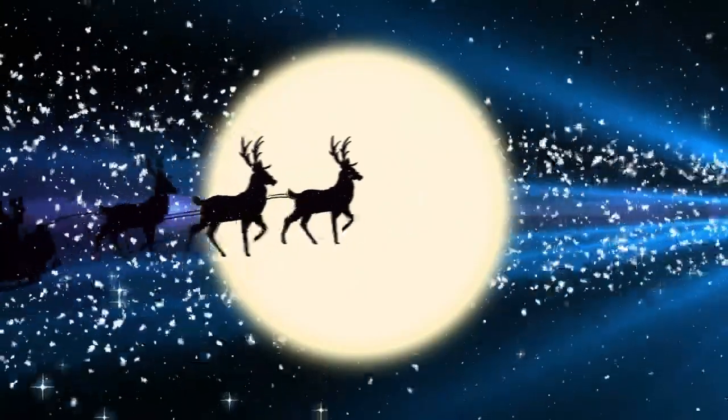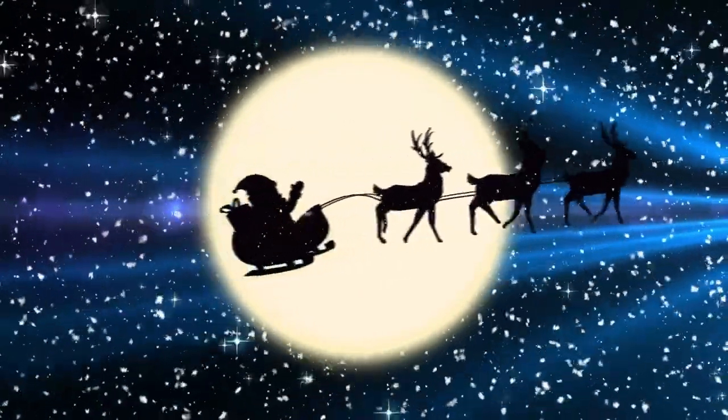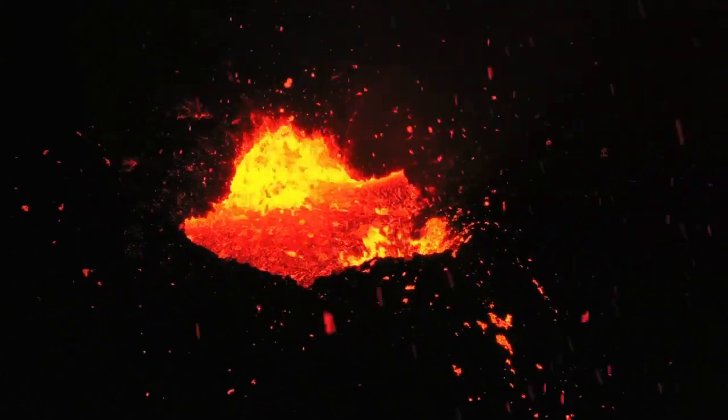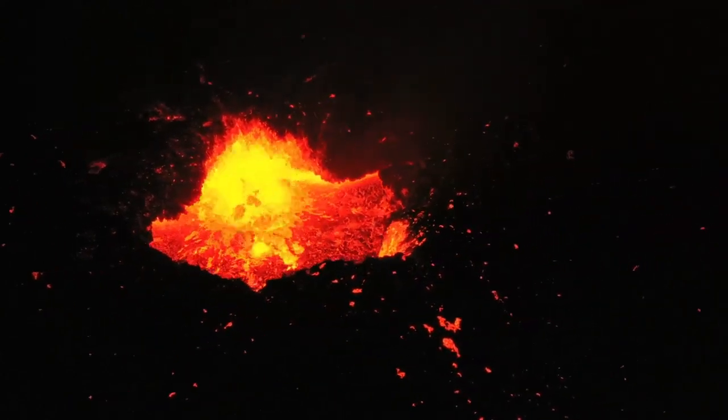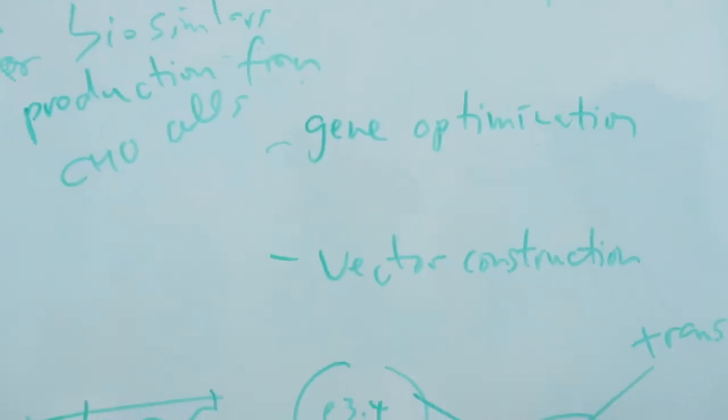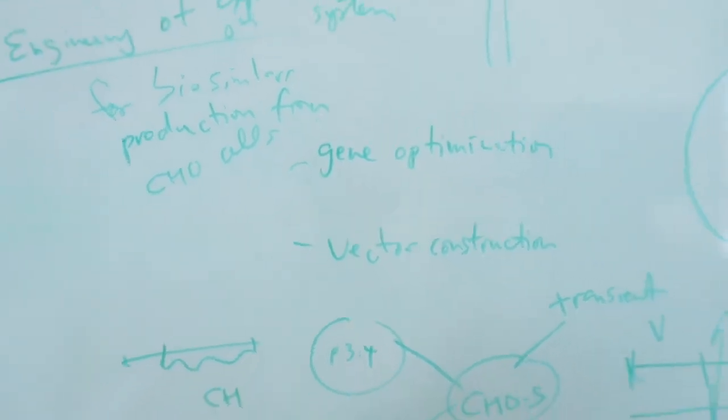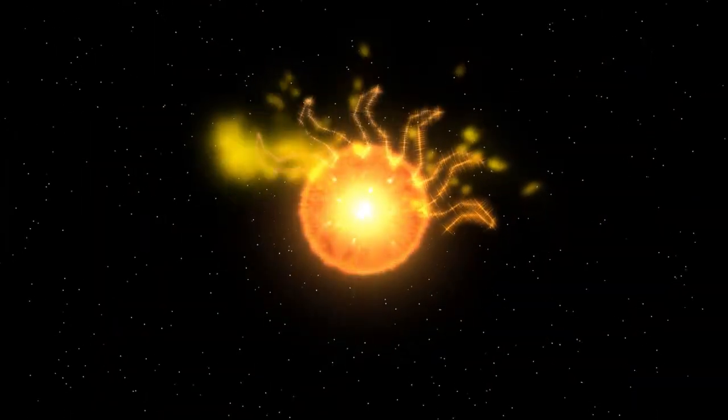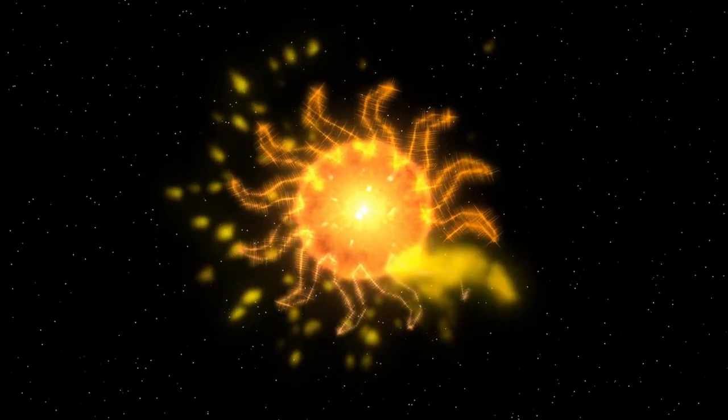However, because of its massive size—10 to 20 times the sun's mass—it has evolved much faster and is already approaching the final phase of its life. When it eventually explodes, it will eject elements forged in its core, like oxygen, carbon, and iron, into space. These elements are fundamental to life, meaning our existence is directly linked to the death of ancient stars.